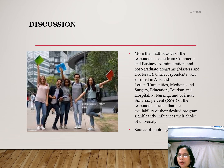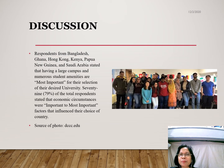66% of the respondents stated that the availability of their desired program significantly influences their choice of university. Respondents from Bangladesh, Ghana, Hong Kong, Kenya, Papua New Guinea, and Saudi Arabia stated that having a large campus and numerous student amenities are most important for their selection of their desired university. 79% of the total respondents stated that economic circumstances were the most important factors influencing their choice of country.